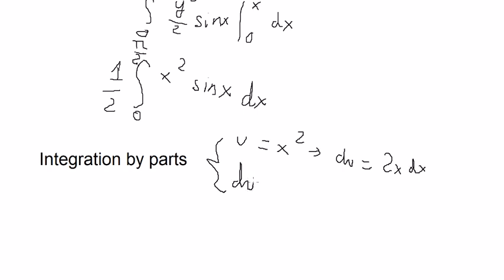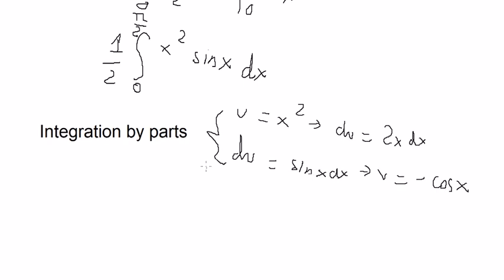dv equals sine x dx, so you get v equals negative cosine x. So we have 1 over 2 in here.